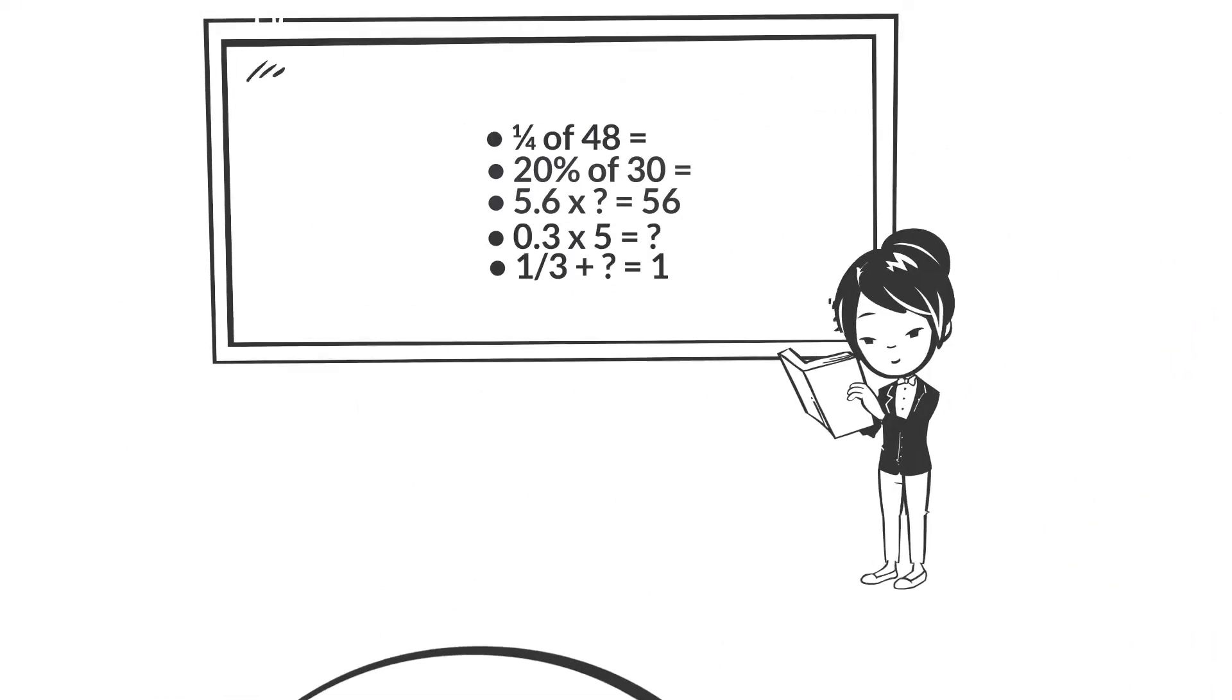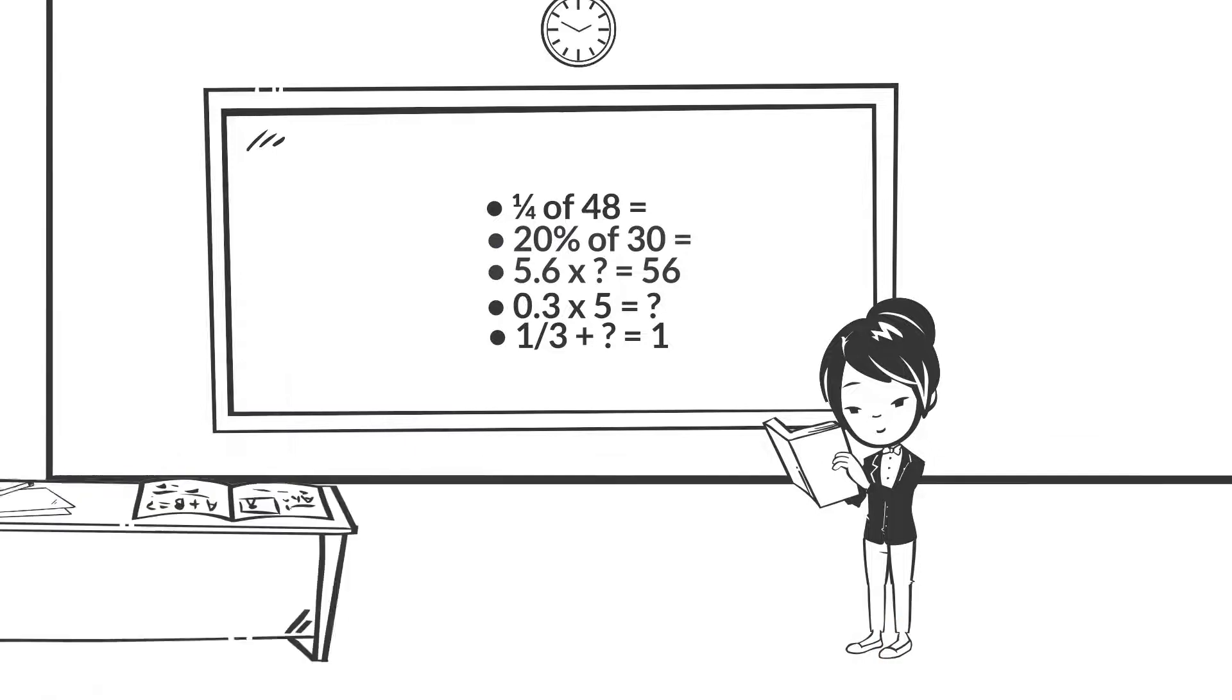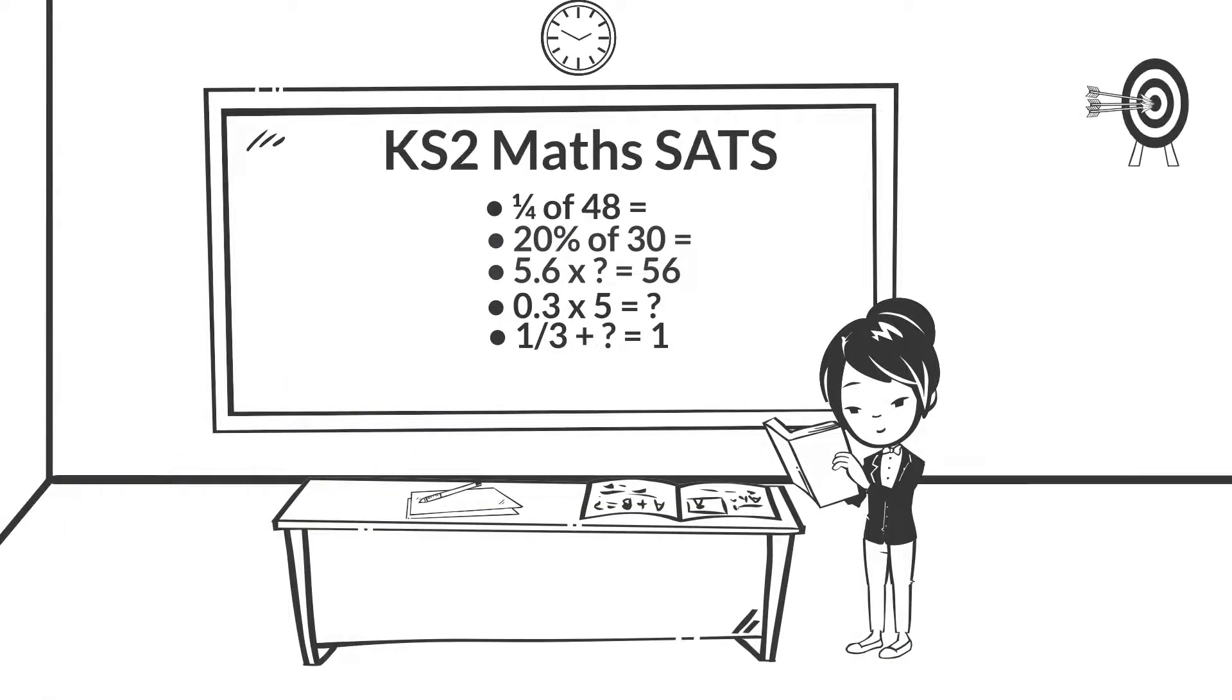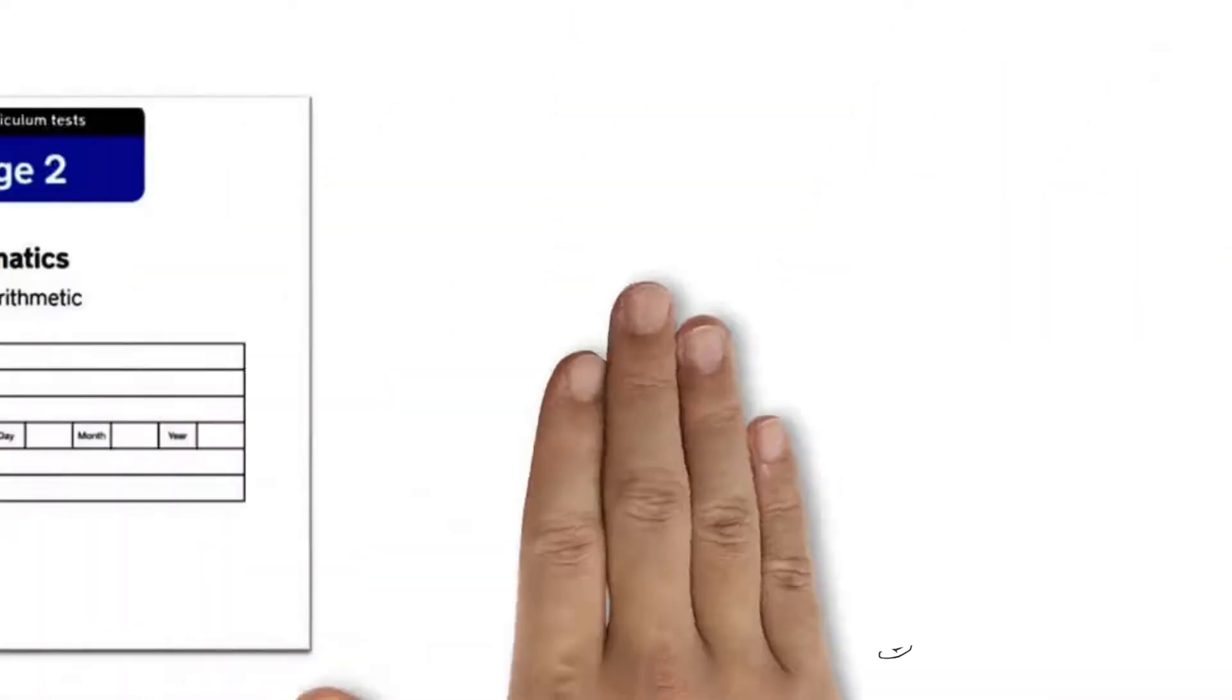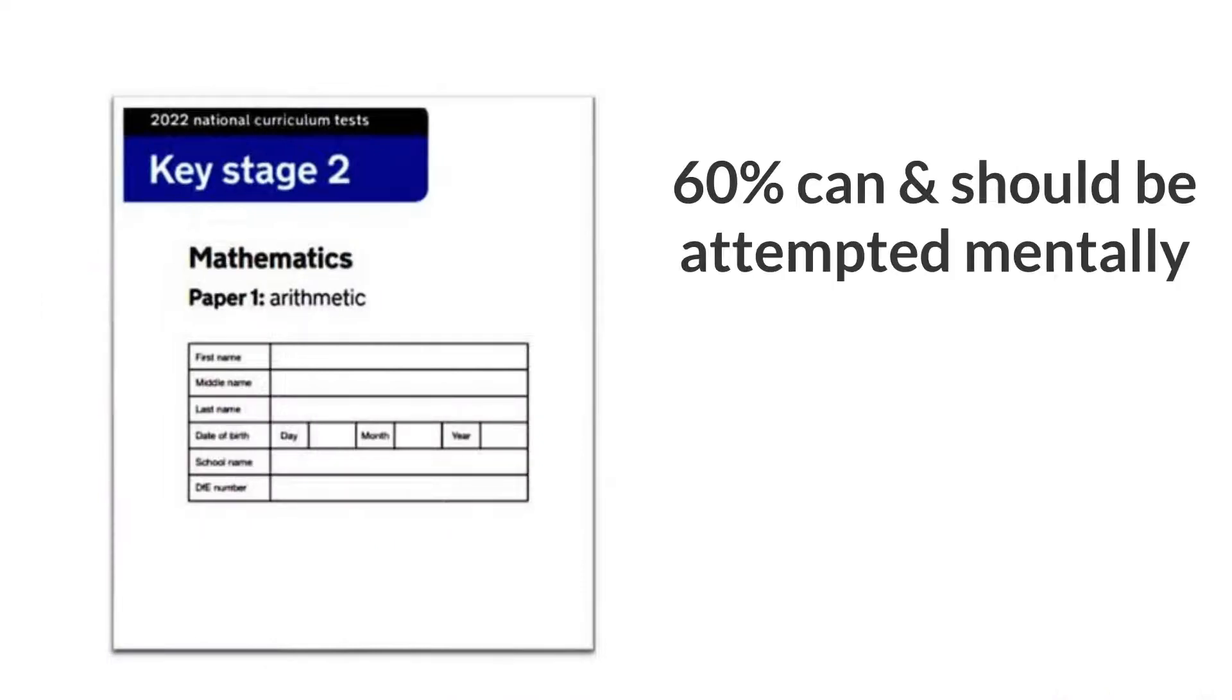Because Amanda struggles with mental fluency, she also struggles to achieve the expected standard in the Key Stage 2 math SATs. Did you know that at least 60% of the questions in Paper 1 can and should be attempted mentally?